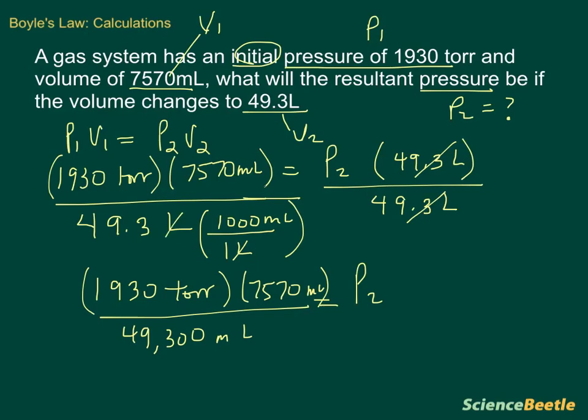So to simplify this a little bit further, we're going to go ahead and take 1930 and multiply that by 7570. And that will give us the following number. I'm just going to erase this because it's getting a little cluttered here. So we're going to erase this top number. And that number is going to be what we just calculated. And so that number turns out to be 14,610,100.